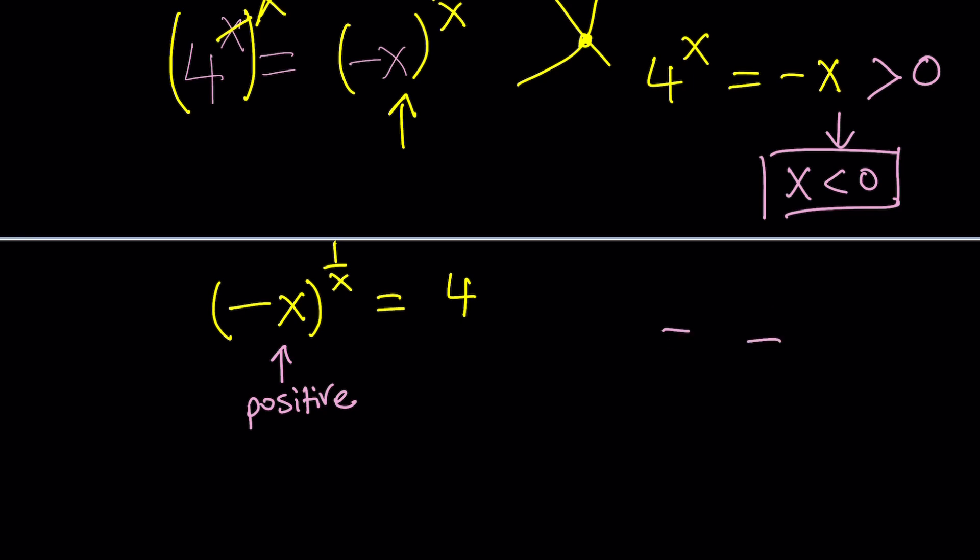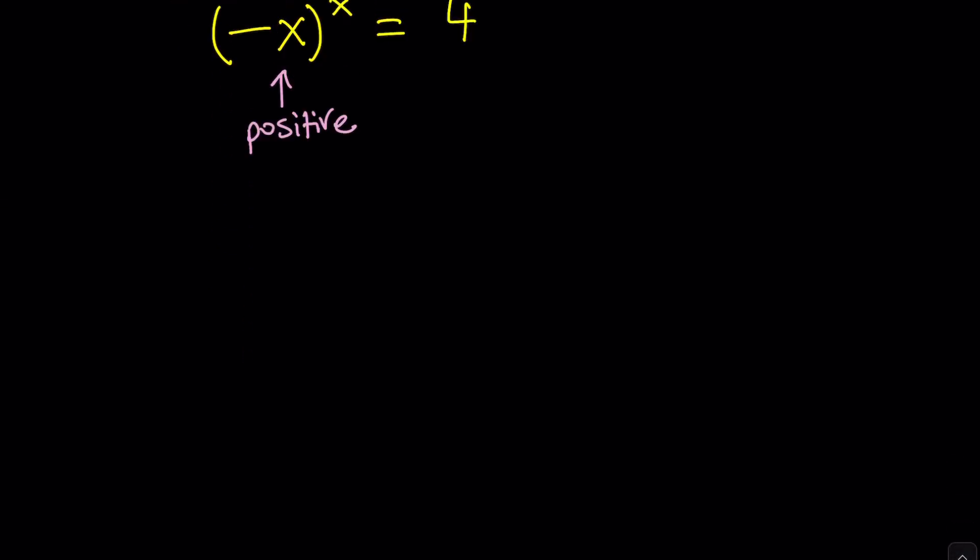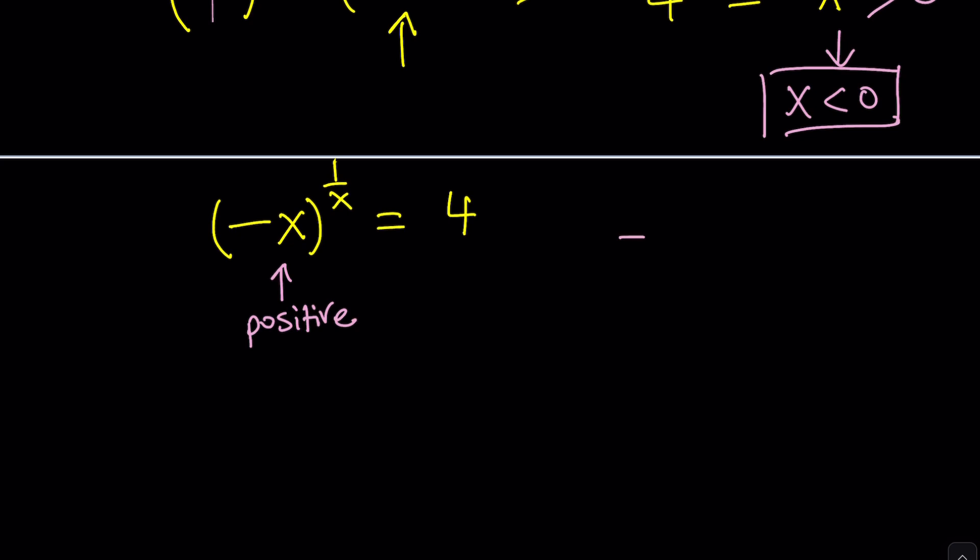Here's what we're going to get. I'm going to replace negative x with a. That's going to give me x equals negative a and 1 over x is going to be negative 1 over a. Now, replace negative x with a and then you're going to raise it to the power 1 over x, which is negative 1 over a. And that is equal to 4.